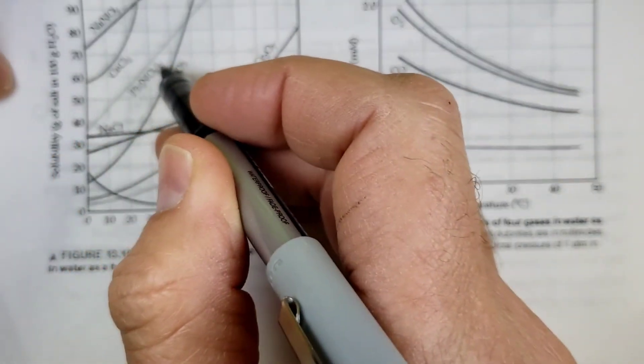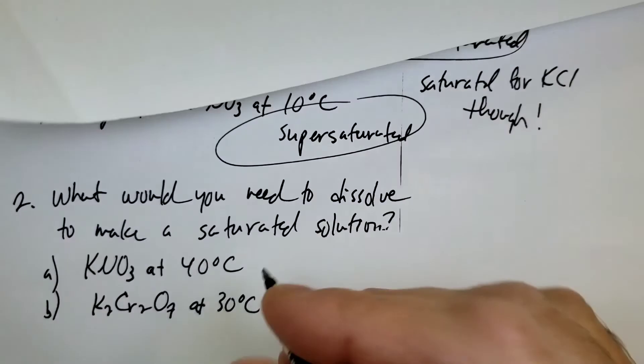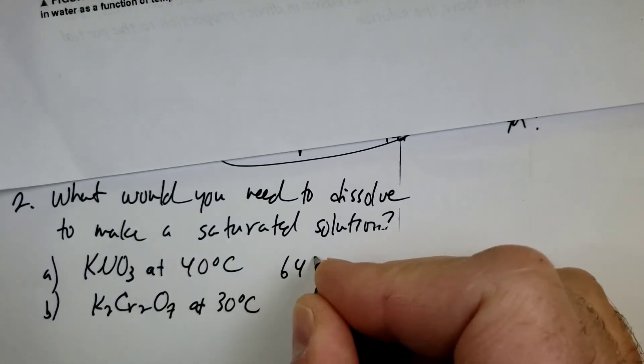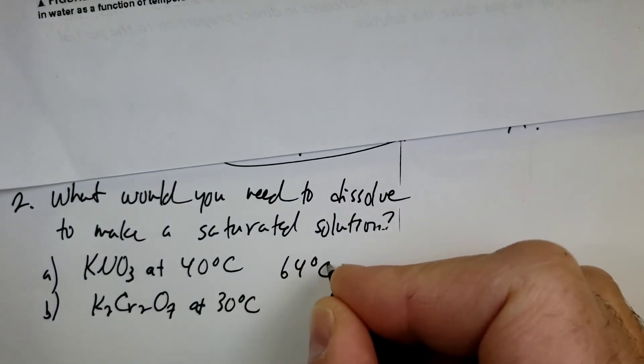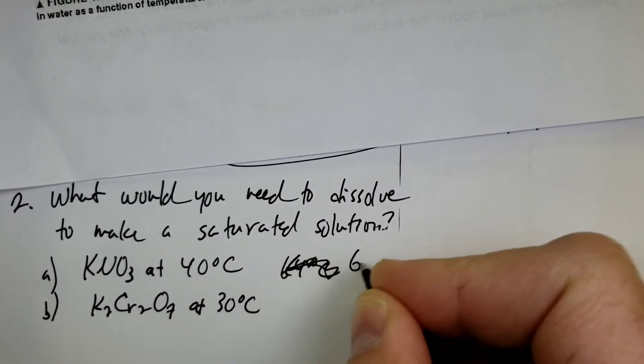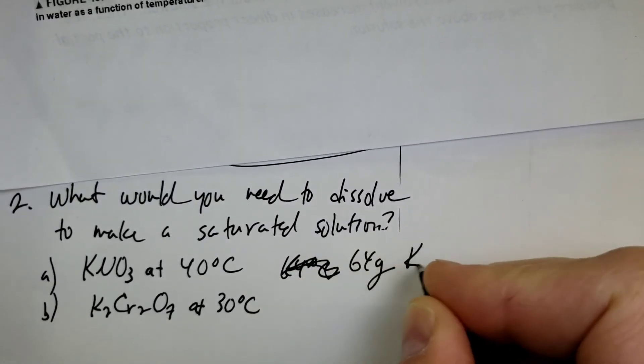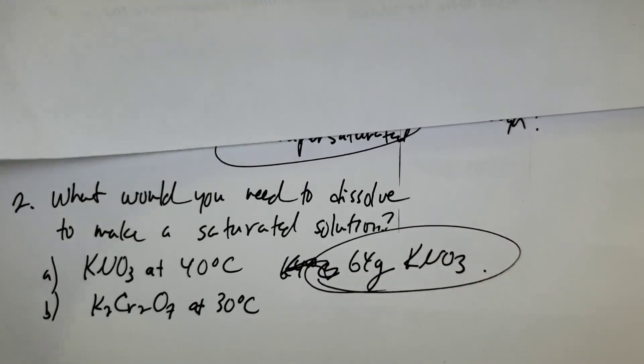So at 40 degrees C, if I dissolve 64 grams of KNO3, it would be saturated. Not 64 degrees C, but 64 grams of KNO3. That's how much I would need to dissolve.